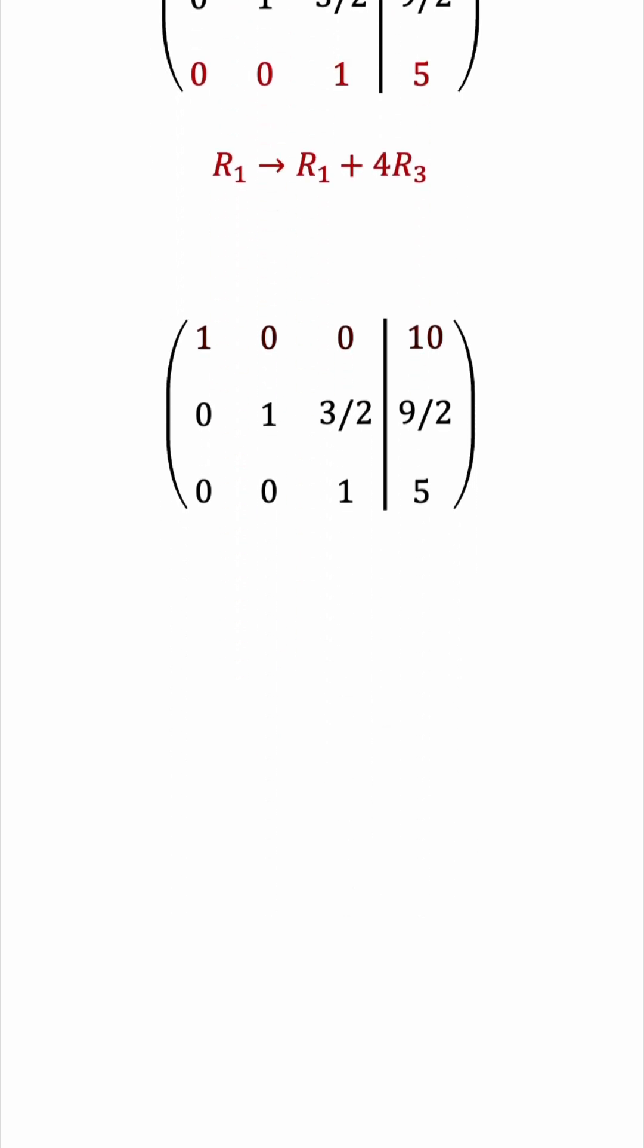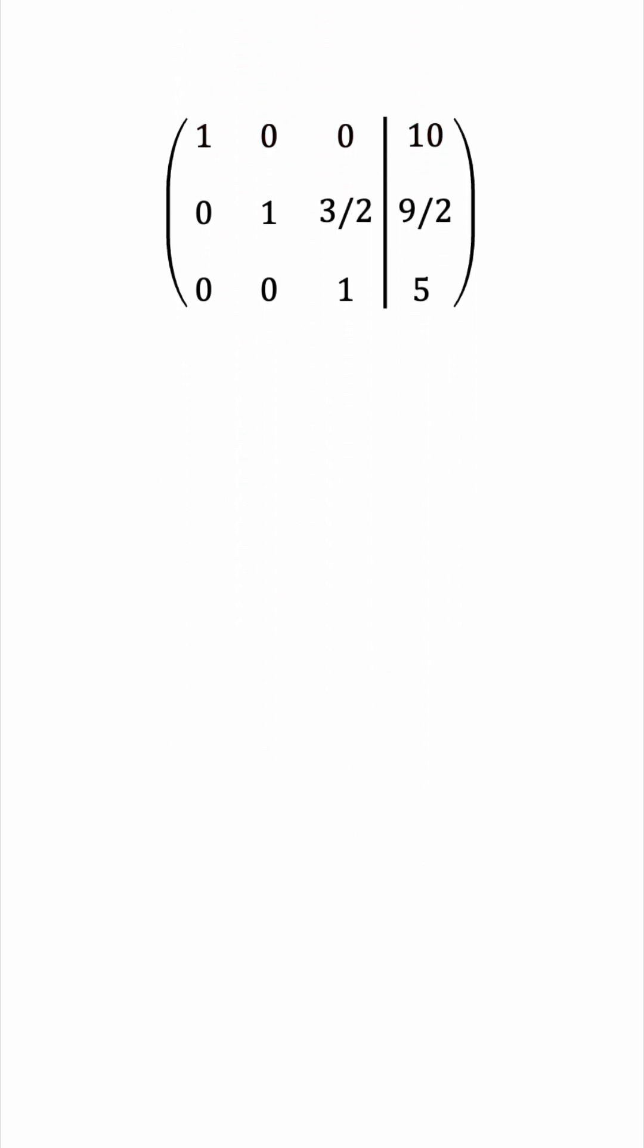Then we can subtract 3 over 2 copies of row 3 from row 2, and this completes the reduced row echelon matrix.